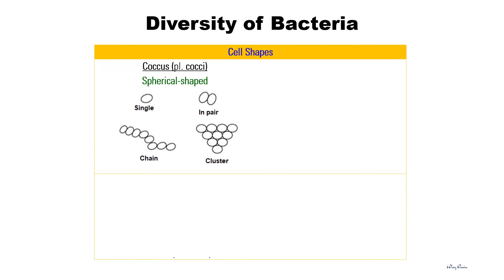The diversity of bacteria can be studied based on the shape of the cell. The first shape is coccus, or plural cocci, which means the bacteria are in a spherical shape. They can be found in single, in pairs, in chains, or in cluster form.